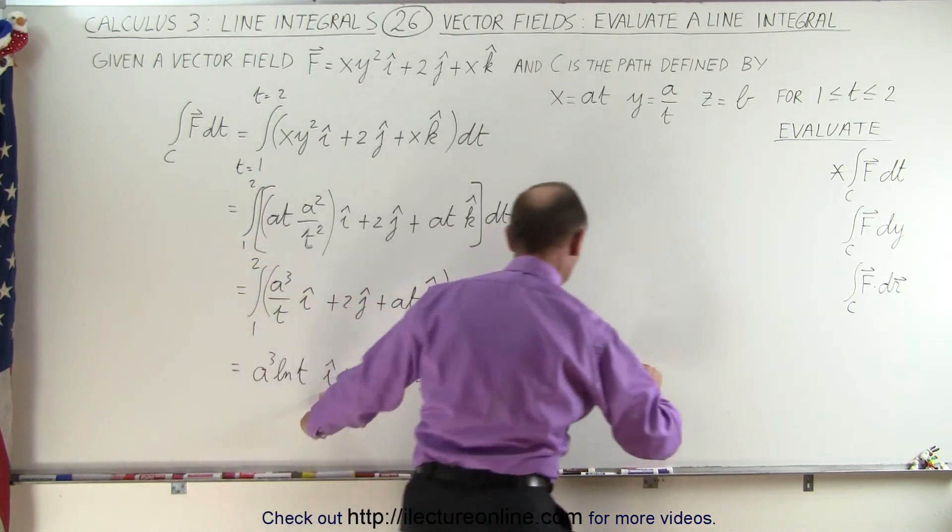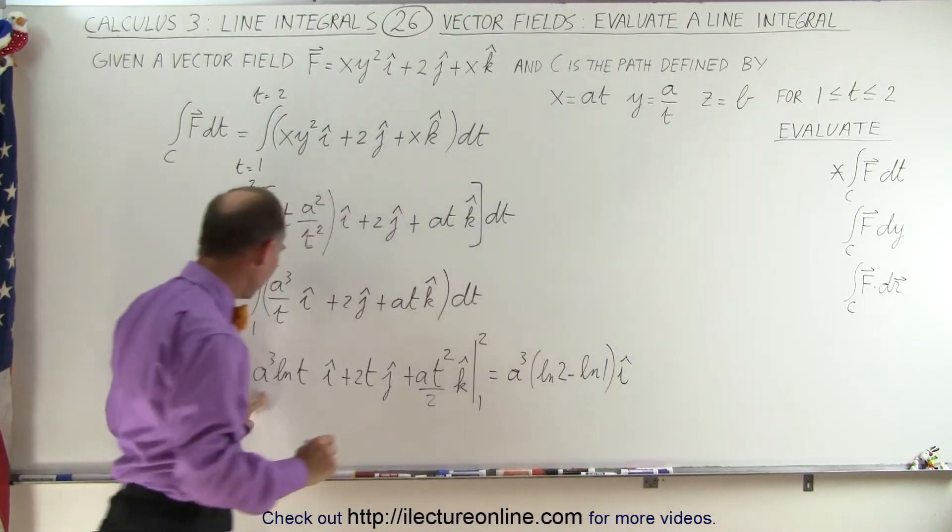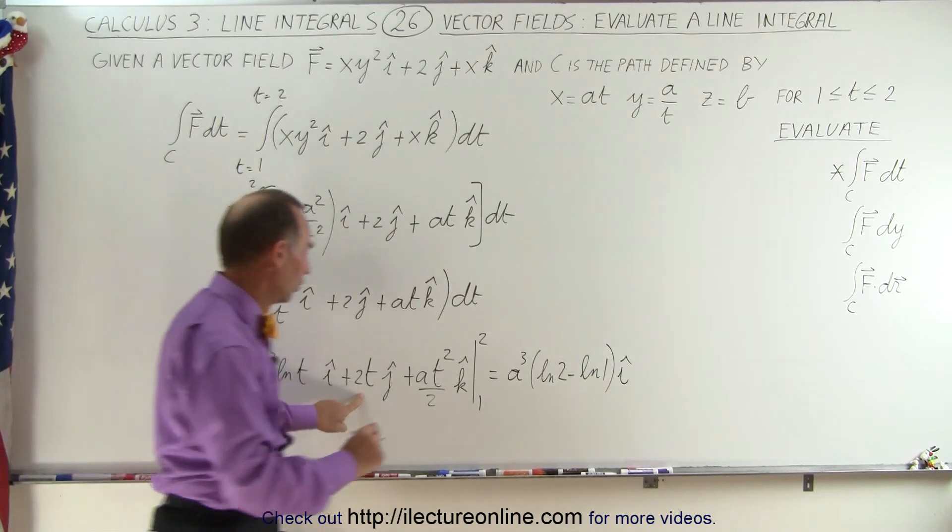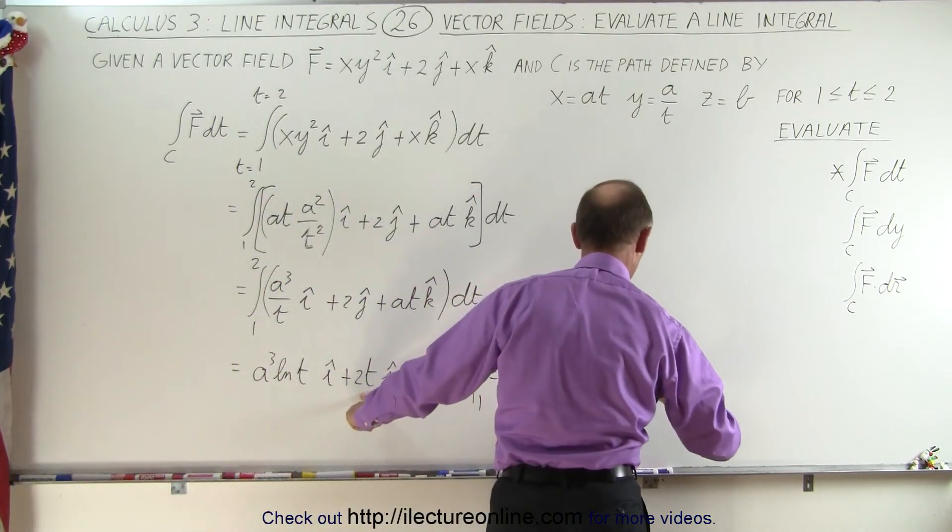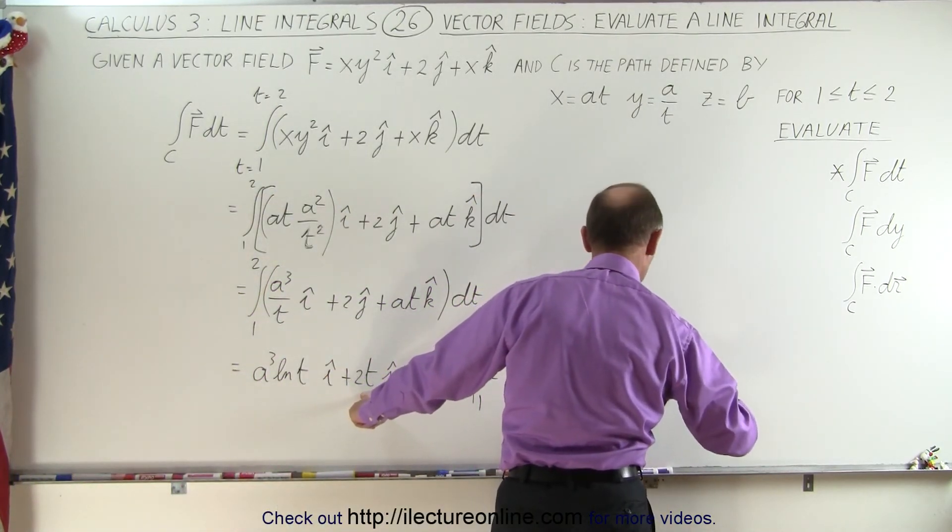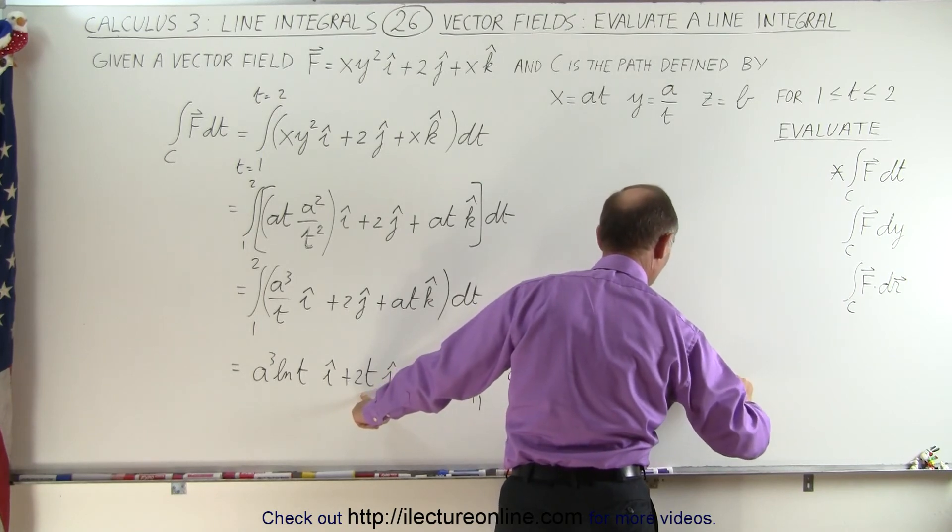And that's in the i direction right here. So this is the first term evaluated at the upper and lower limit. But the second term, so that would be plus 2 times the upper limit would be 2 minus the lower limit would be 1 in the j direction.